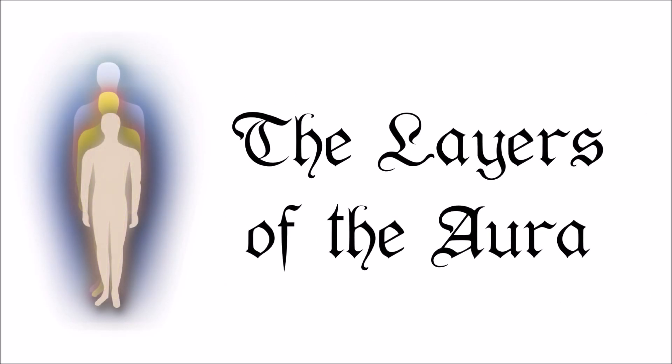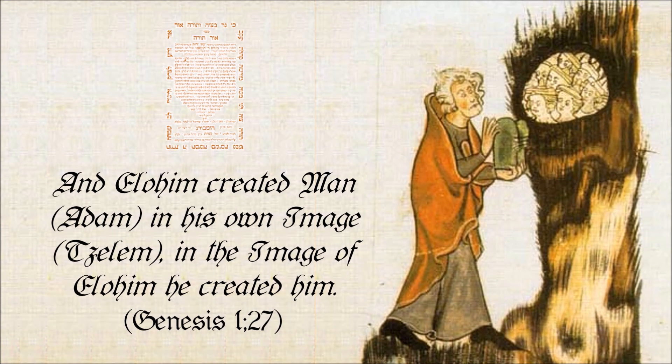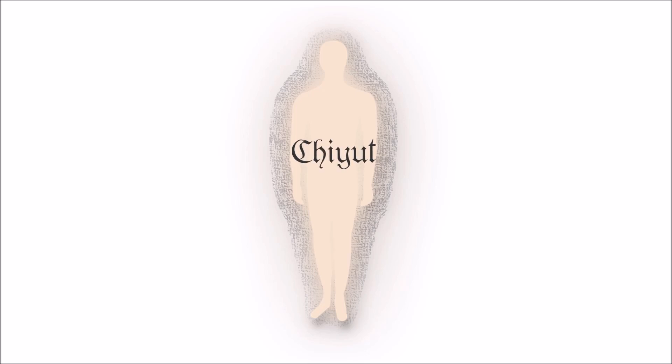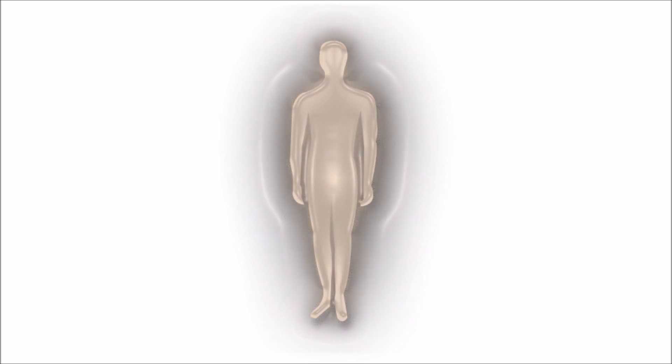The etheric body or the etheric aura: in occult philosophy, the material body is considered a representation of the etheric body. The etheric body is therefore referred to as the real and true body, for instance by Walter Ernest Butler. This concept is already described in the Bible: "And Elohim created man, Adam, in his image, Zelem. In the image of Elohim, he created him." Genesis 1:27. The etheric body is permeated by etheric life force, called Chiyut in Hebrew. We perceive the emanation of the etheric body — that is, the etheric aura — close beside the physical body. The health condition of a person can be recognized by the etheric aura, which is why it is also called the health aura.